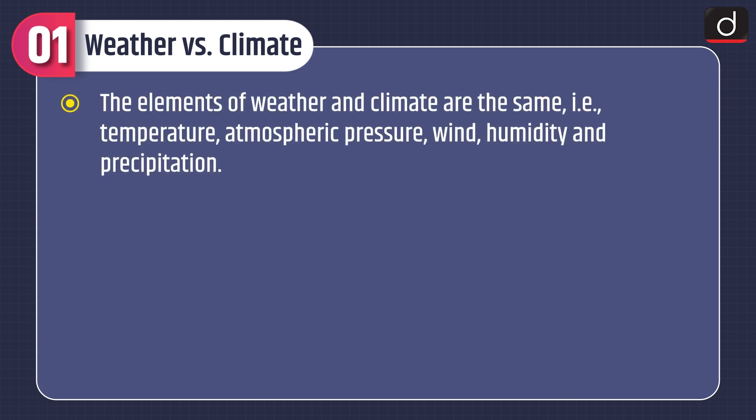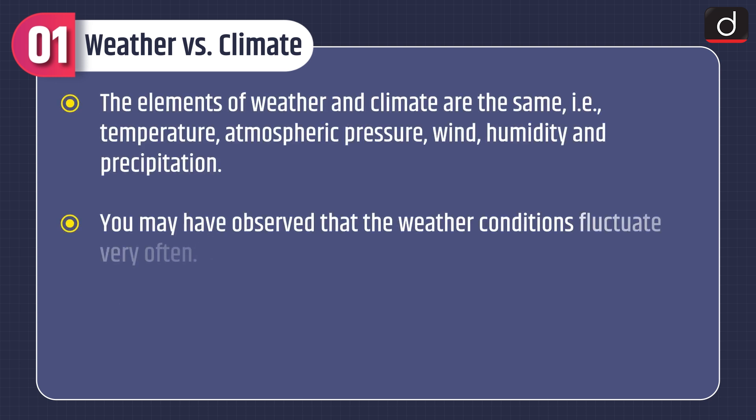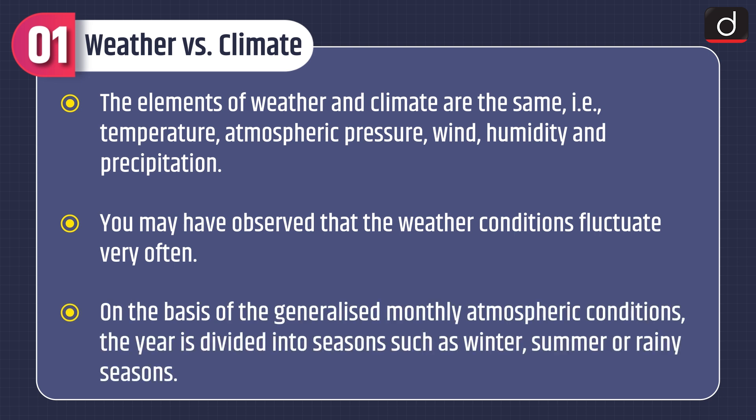The elements of weather and climate are the same: temperature, atmospheric pressure, wind, humidity, and precipitation. You may have observed that the weather conditions fluctuate very often. On the basis of the generalized monthly atmospheric conditions, the year is divided into seasons, such as winter, summer, or rainy seasons.